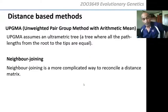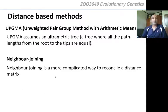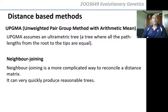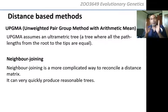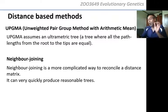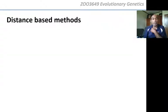There's also neighbor joining, which is a more complicated way to reconcile a distance matrix based on star contraction. It very quickly produces reasonable trees and does not give you an ultrametric tree. The branch lengths in a neighbor joining tree more closely reflect the actual genetic distances between individuals, so root-to-tip distances will not be equal — some leaf branches can be long and some short.